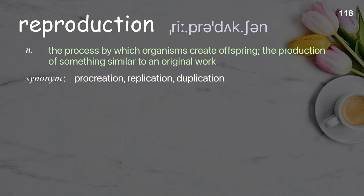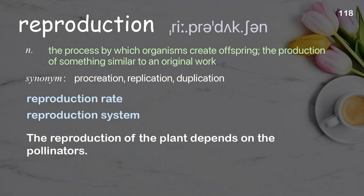Reproduction: the process by which organisms create offspring; the production of something similar to an original work. Examples: reproduction rate; reproduction system; the reproduction of the plant depends on the pollinators.